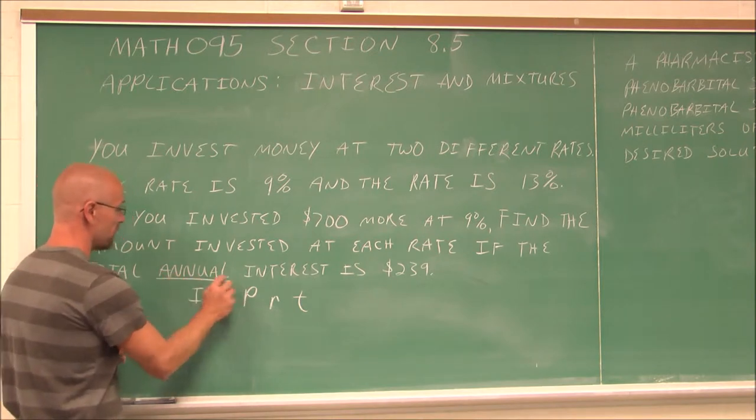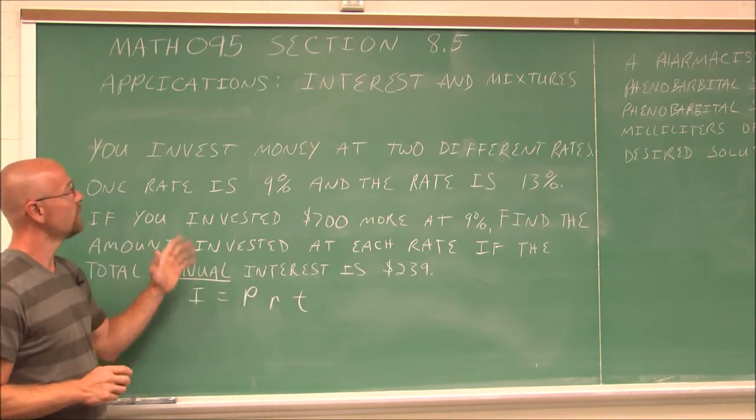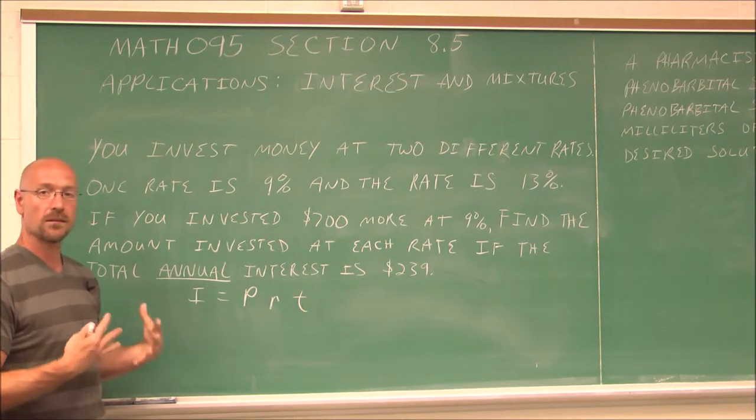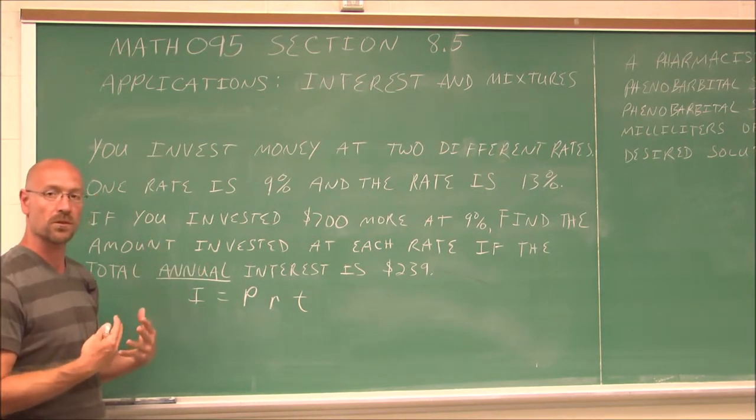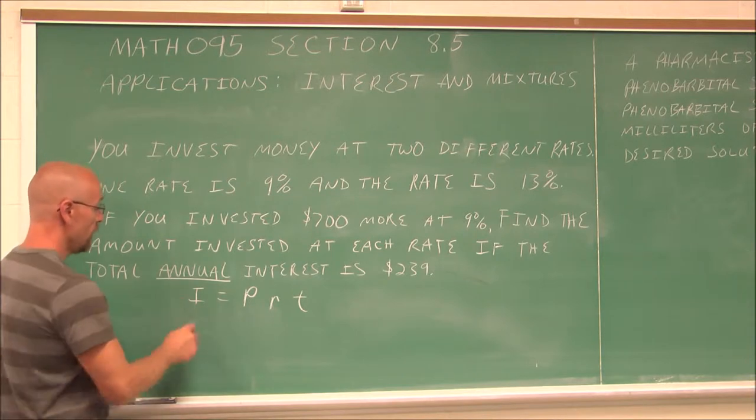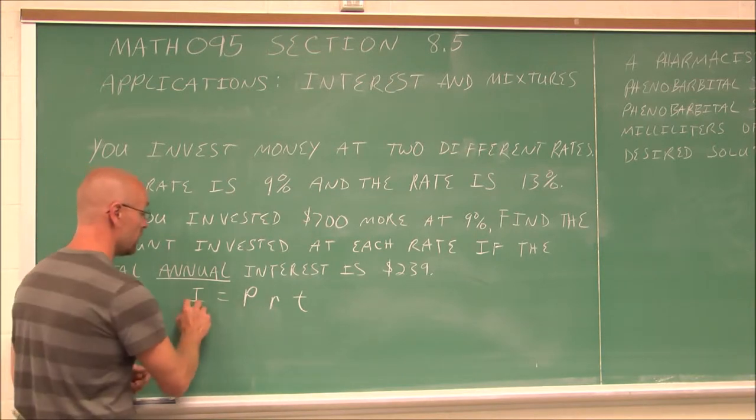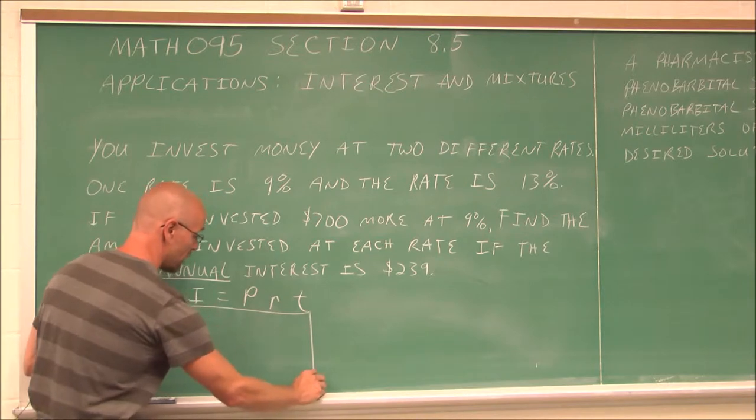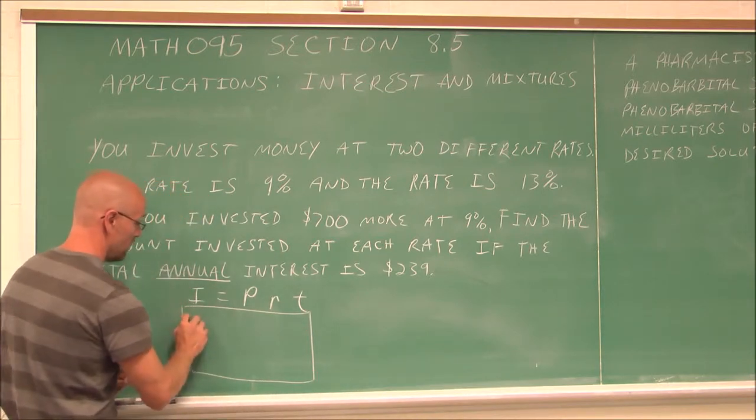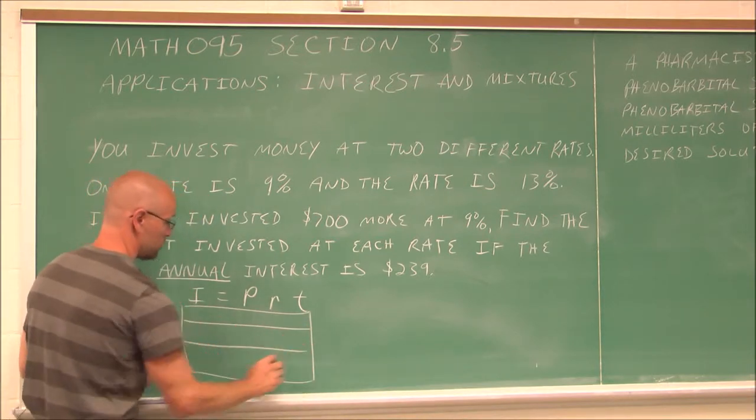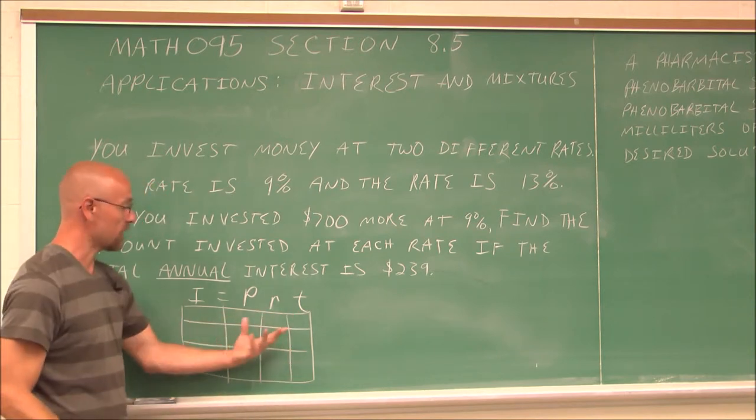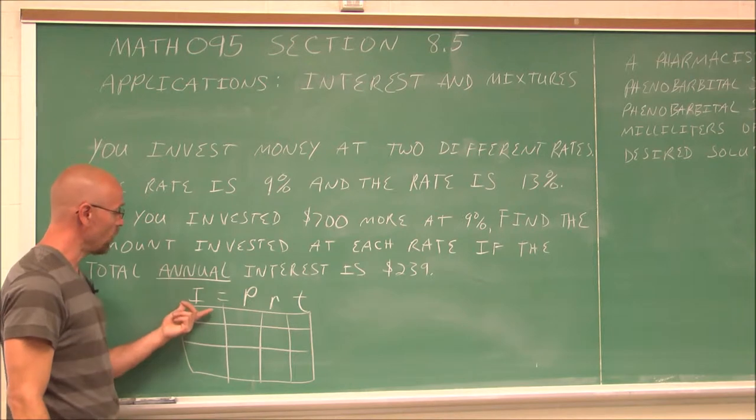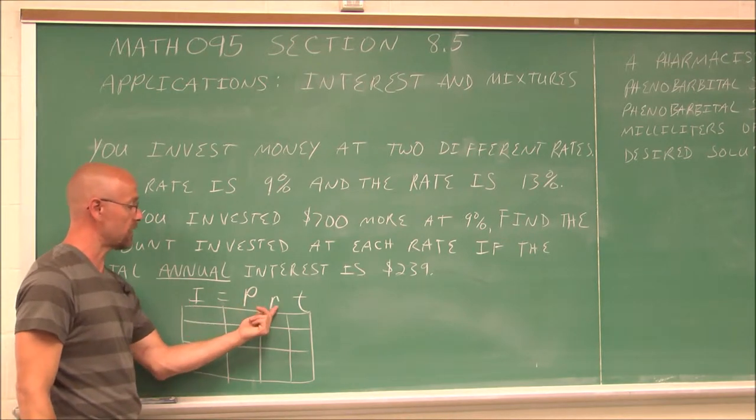I'm going to underline this word here, annual. It's very important. So if we read it again, sometimes when we do application problems dealing with interest or mixtures, we want to use a table. And essentially, this equation is what we're going to use to build our table. So I separate a box for each variable. What we have here is interest equals principal times rate times time.